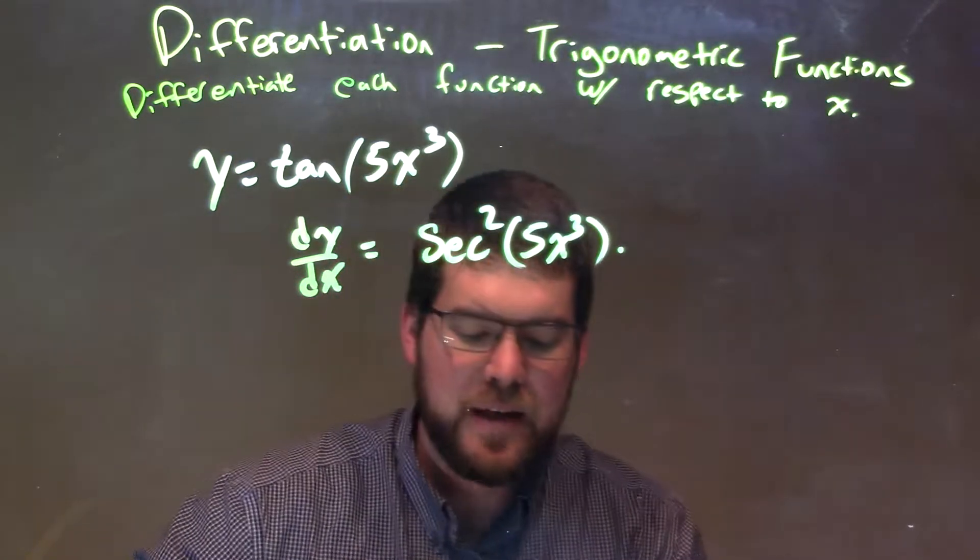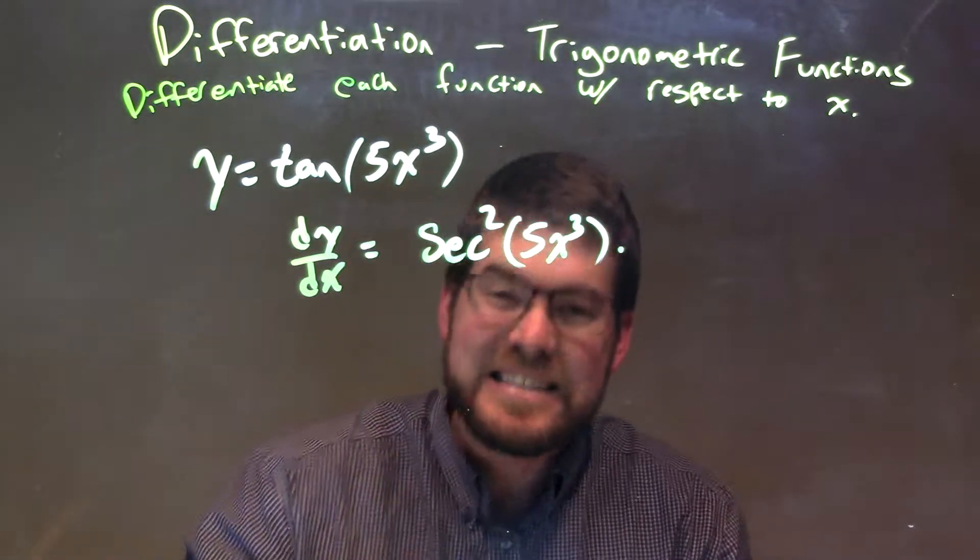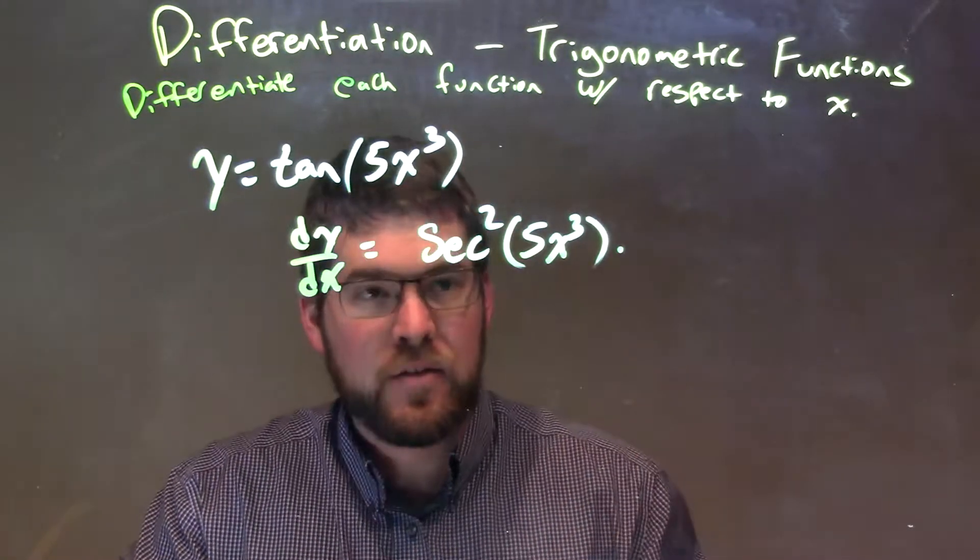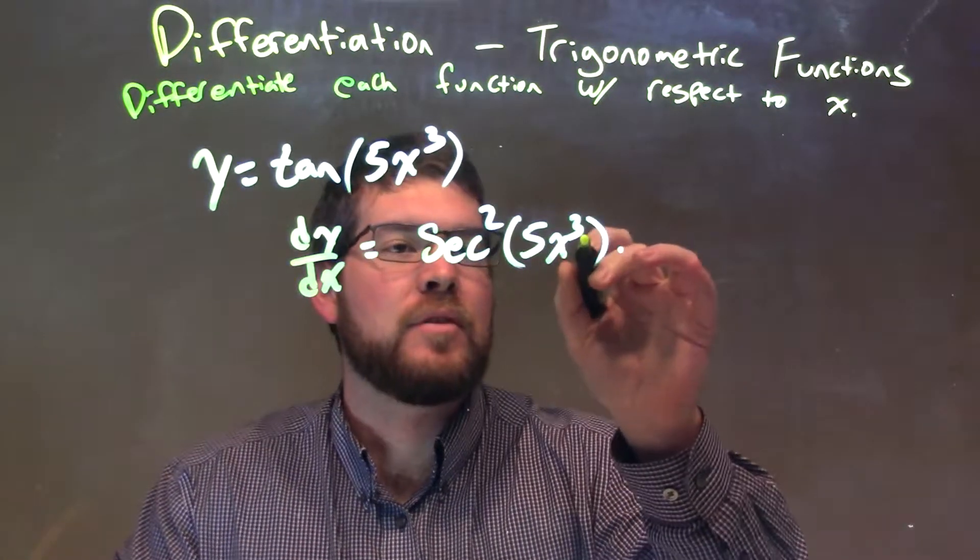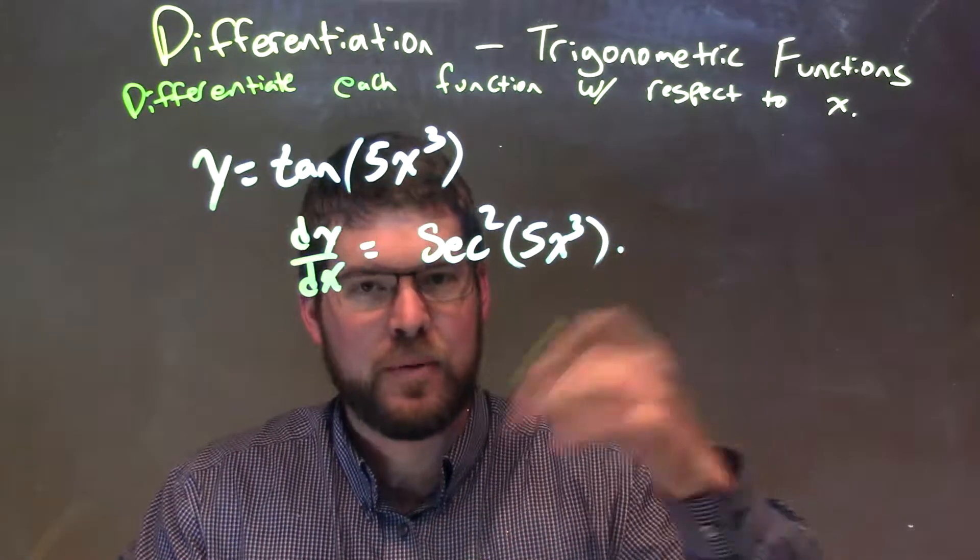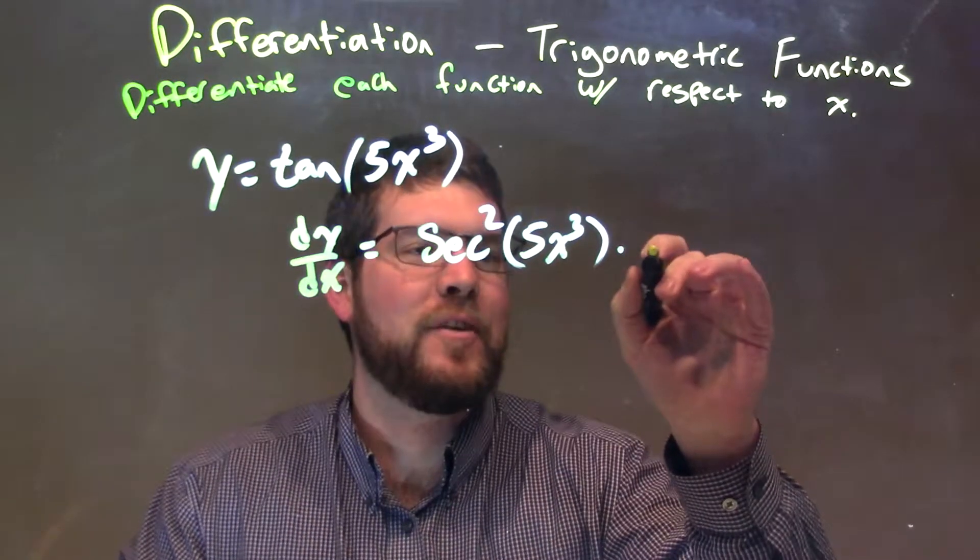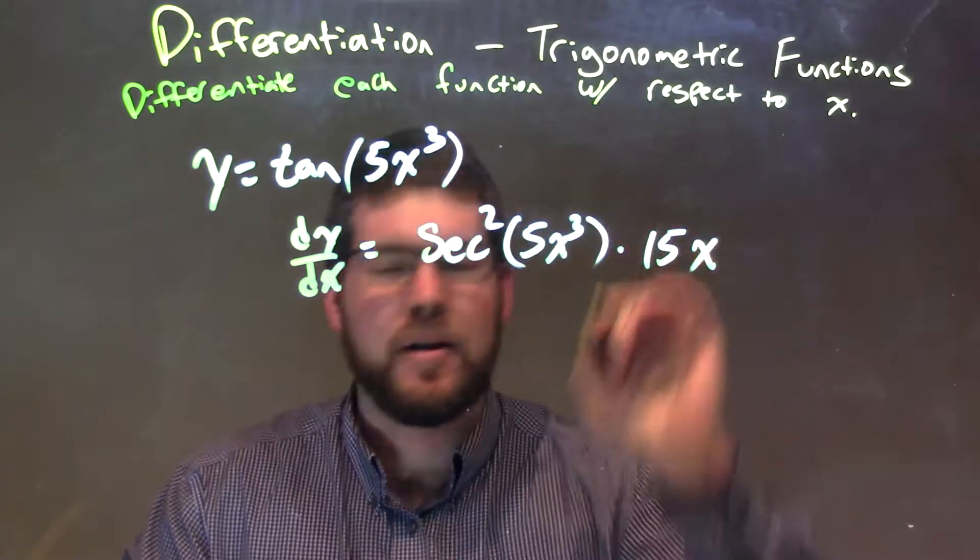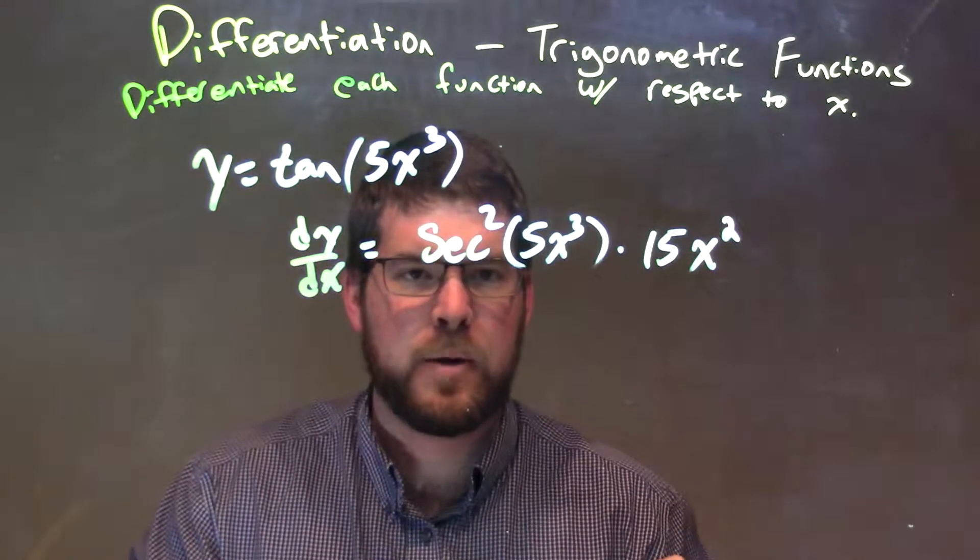But now, we still need to take the derivative of the inside. Derivative of the inside is, well, 5x to the third power. 3 comes down, multiply that by 5, and you get 15. So we have 15x, and x gets subtracted by 1, so it's squared.